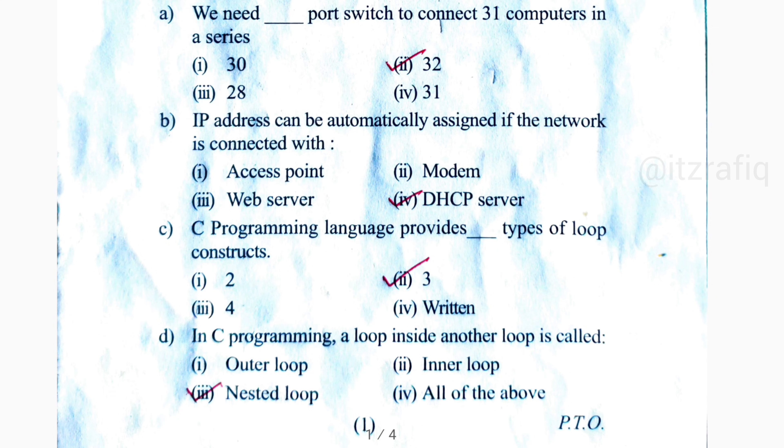Number B, DHCP server provides automatic IP address. Number C, there are three types of loops: for loop, while loop, and do while. And number D, loop inside another loop is called nested loop.